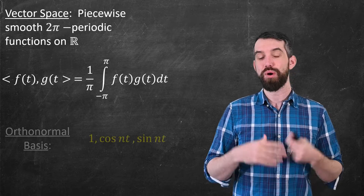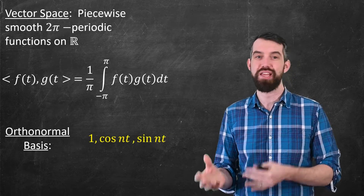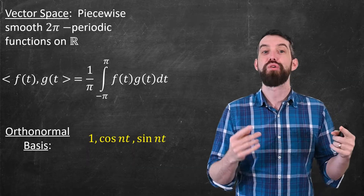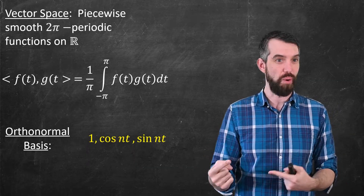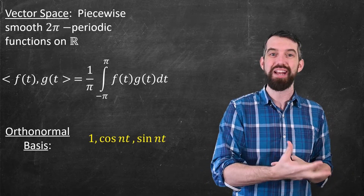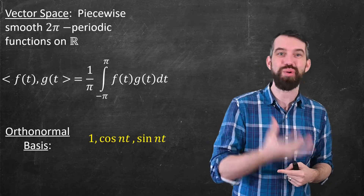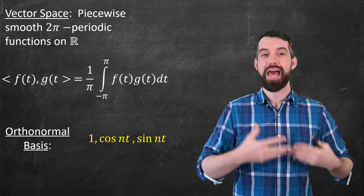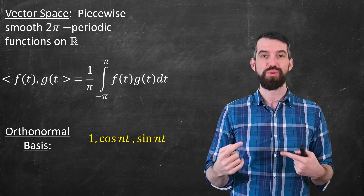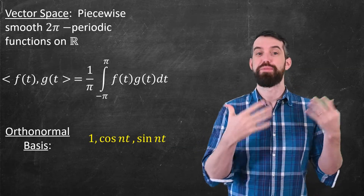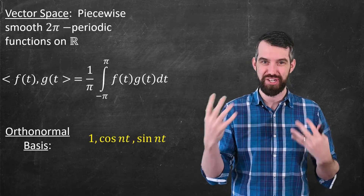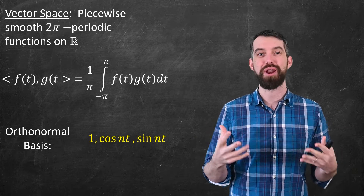All of those inner products are zero unless you're taking the inner product of a basis function with itself — like sin(3t) with sin(3t) — in which case it equals 1. There's one small caveat: the inner product of the constant function 1 with itself adds up to 2, not 1, which is why the Fourier series definition includes an a₀/2 term — to adjust for that fact.